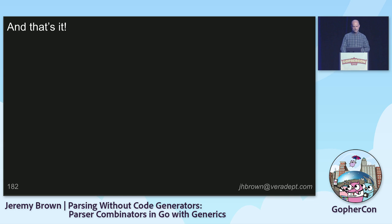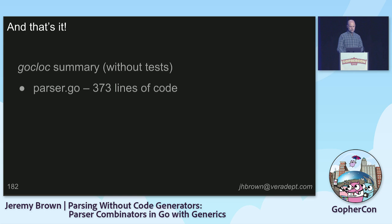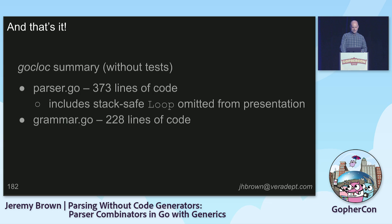According to GoClock, overall the parser library has 373 actual lines of code. That includes the stack-safe loop that I'm not talking about today. The grammar we wrote for the configuration language was 228 lines of code. So around 600 lines of code total — and that doesn't include any tests.